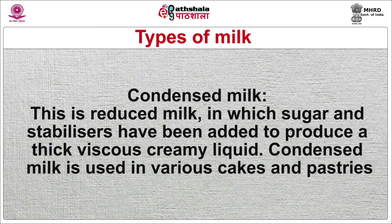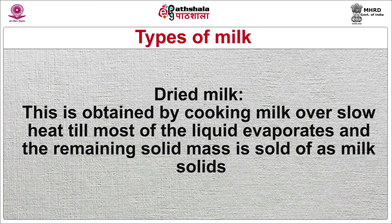Condensed milk is reduced milk in which sugar and stabilizers have been added to produce a thick, viscous, creamy liquid; it is used in various cakes and pastries. Dried milk is obtained by cooking milk over slow heat until most of the liquid evaporates and the remaining solid mass is sold as milk solids.